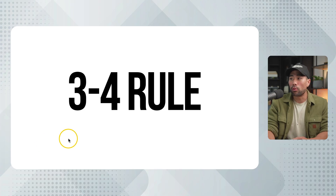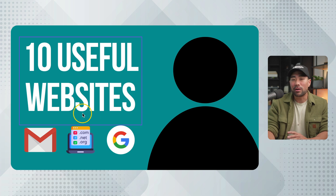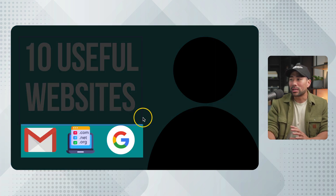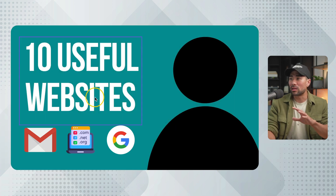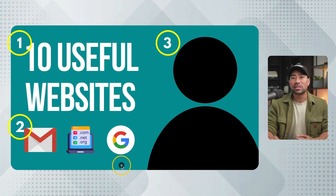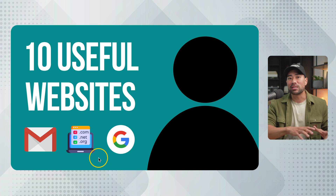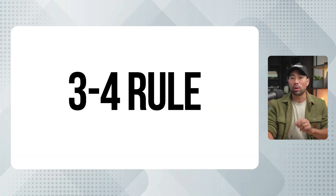Now that you understand thumbnail psychology, the next thing I want to bring your attention to is something called the 3-4 rule. This is something I made up myself based on experience and experimentation. An example would be: no more than three to four words, and no more than three to four elements — where one element could be a group of icons, another could be a photo, and so on. You can use this 3-4 rule as a guideline so you follow some sort of structure and layout. In my space as an educator, this works pretty well. So when in doubt, remember the 3-4 rule.